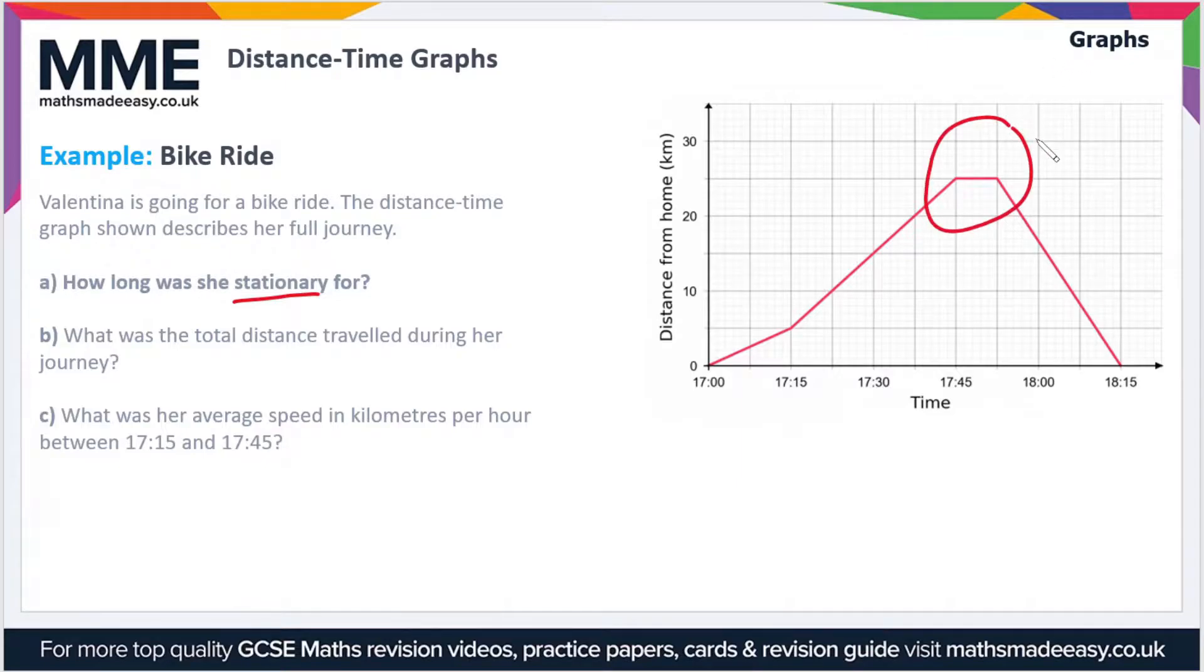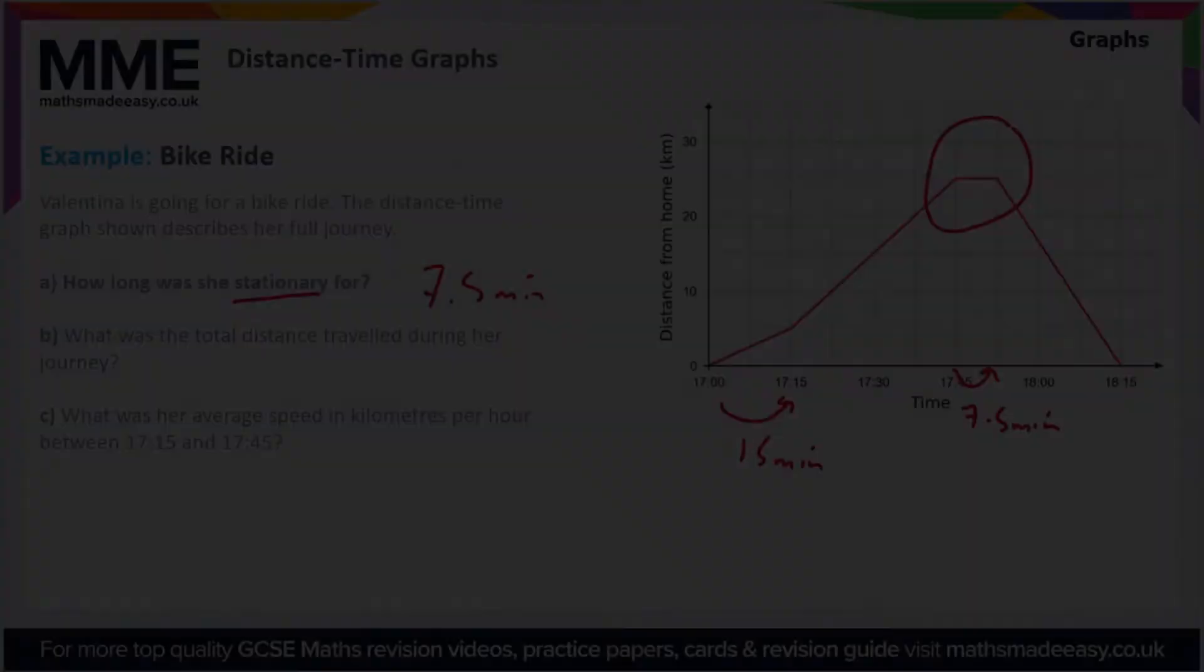Now, if we look at the time scale, we can see that across two squares we travel a time of 15 minutes. So that means in one big square we go 7.5 minutes. So the amount of time she was stationary for is 7.5 minutes, or 7 minutes 30 seconds if you prefer to write it like that.